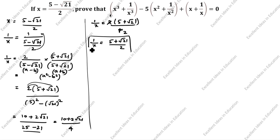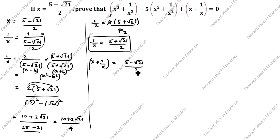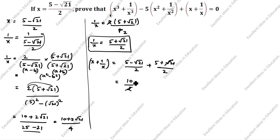Now, in this question we need x plus 1/x. What is the value of x plus 1/x? x is (5 minus √21)/2 and 1/x is (5 plus √21)/2. The √21 terms cancel, and 5 plus 5 is 10. So 10 divided by 2 equals 5. Therefore x plus 1/x is equal to 5.